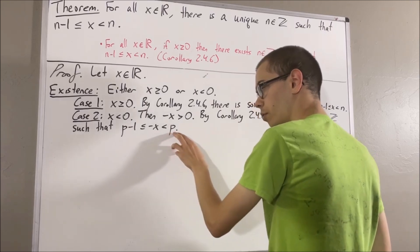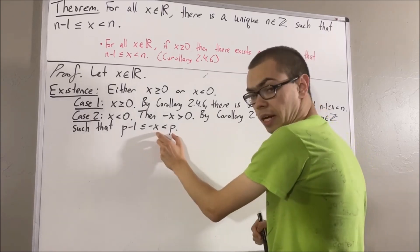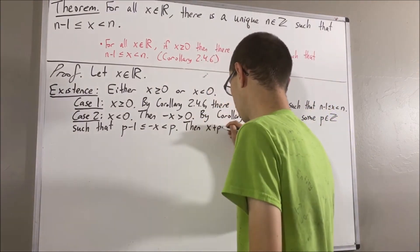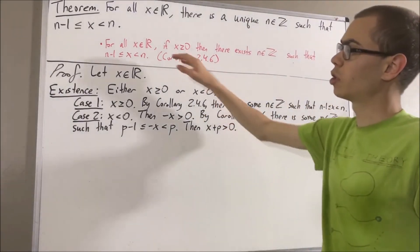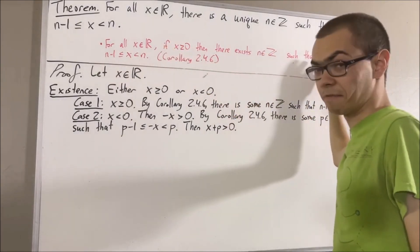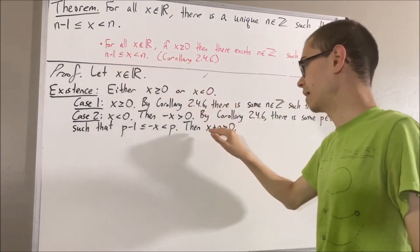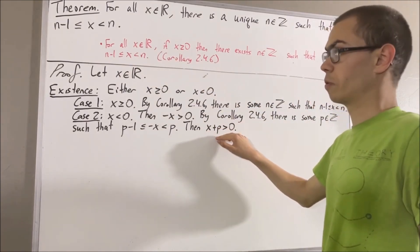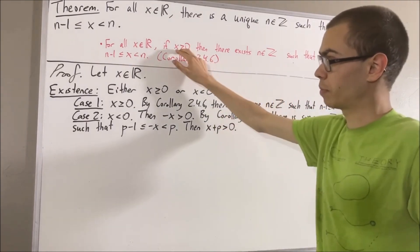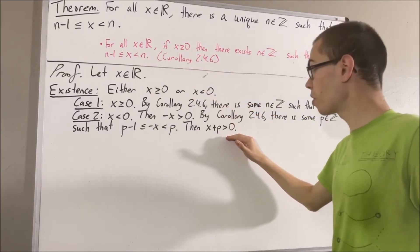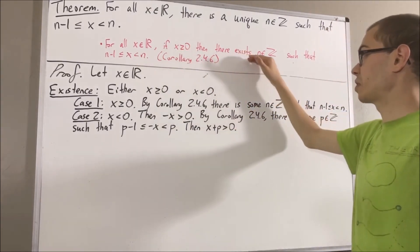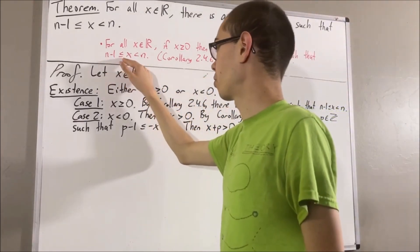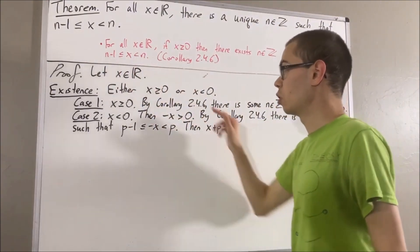But then, if we focus on this inequality and add x on both sides, we get that x plus p is greater than 0. And now let's apply Corollary 2.4.6 again — we'll take x here to be x plus p. Since x plus p is greater than or equal to 0, we have that there is some integer — I'll call it q — such that q minus 1 is less than or equal to x plus p, which is less than q.